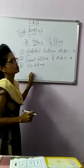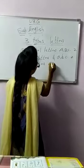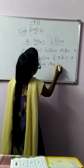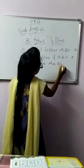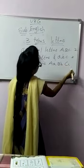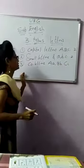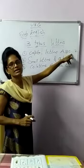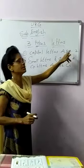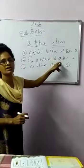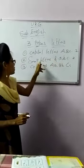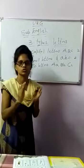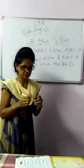Now the last one: pair letters. Pair letters means what? When you are writing capital letters and small letters, both together, that is known as pair letters. So capital letters A till Z — when you are writing in big letters, that is capital letters. When you are writing small letters, that is small letters. When you are writing capital and small letters both together, that is known as pair letters.